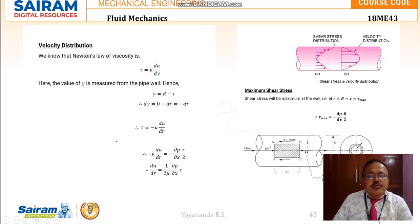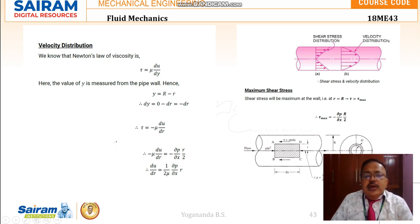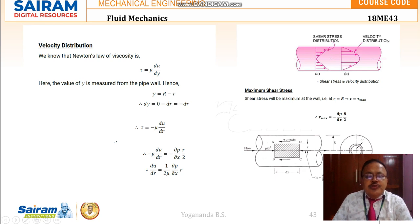Substituting dy = -dr, tau becomes -mu · (du/dr). Now substituting this in place of tau in the shear stress equation -(del P / del X) · (r / 2), and rearranging terms, we get du/dr = (1 / 2mu) · (del P / del X) · r.